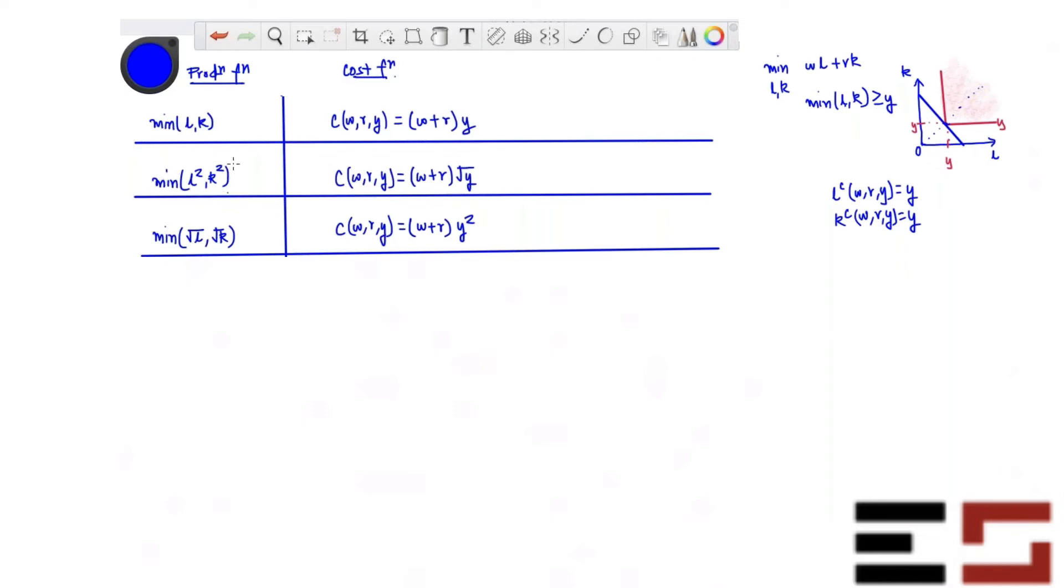Okay, so if you do the same thing with minimum L square K square, you will end up equating L square to Y and K square to Y. That means L will be root Y and K will be root Y. Okay, so you will end up getting this isoquant where this is root Y, L is root Y and K is root Y. And therefore, you are getting the cost as W plus R root Y.